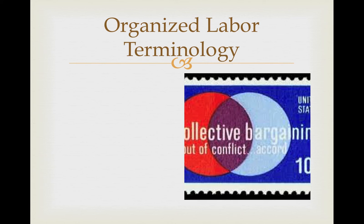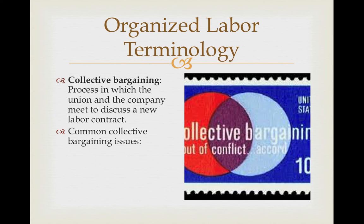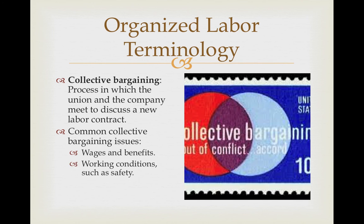Organized labor terminology. Collective bargaining is the process in which the union and the company meet and discuss a new labor contract. Common collective bargaining issues include wages and benefits, working conditions such as safety, and job security, often determined by seniority, which is an important issue.